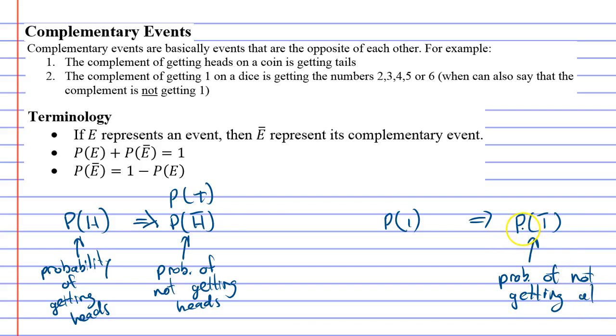Now, what are we talking about when we say the probability of not getting a one? Well, we're talking about the probability of getting all the other numbers two, three, four, five, or six. So the complement of the probability of getting a one is either the one with the line above it, not getting a one, or it's the probability of getting all the other numbers.